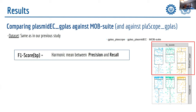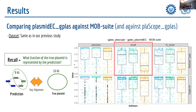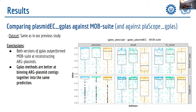Since the F1 score is the harmonic mean of precision and recall, we wanted to know which was driving the difference. We found that precision values were very similar between MOB-suite and both versions of GPlas, but the main difference was in recall. This leads us to conclude two things: both versions of GPlas outperform MOB-suite at reconstructing ARG plasmids, and the GPlas methods are better at binding contigs together into the same prediction — hence the higher recall.